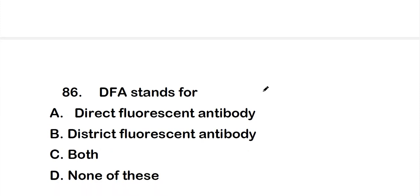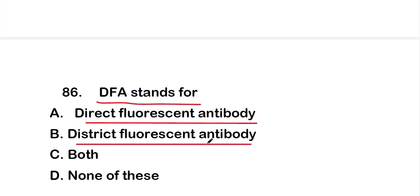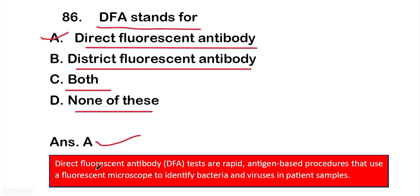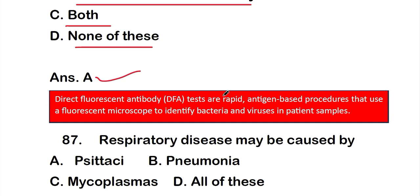Question number 86: DFA stands for option A, direct fluorescent antibody; option B, district fluorescent antibody; option C, both; option D, none. The right answer is option A — direct fluorescent antibody. DFA tests are rapid antigen-based procedures that use a fluorescent microscope to identify bacteria and viruses in patient samples.